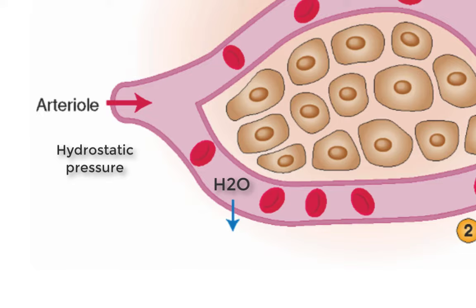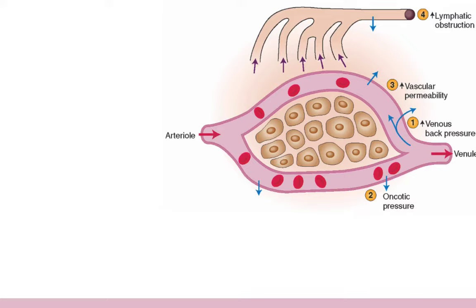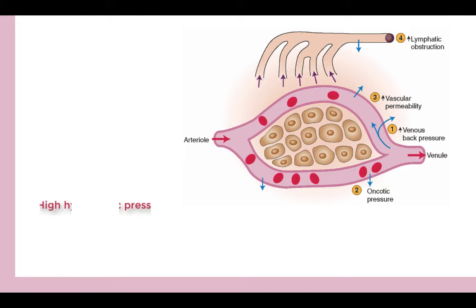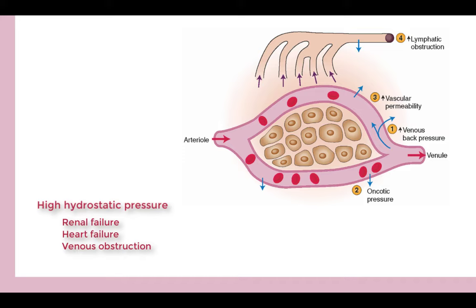Conditions in which vascular hydrostatic pressure increases include renal failure, heart failure, and venous obstruction. A major function of the kidney is to excrete extra fluid as part of fluid homeostasis. In case of renal failure, we lose this ability — fluid accumulates in the vascular space, increasing hydrostatic pressure, and edema develops.